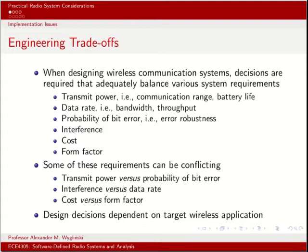For instance, we would love to keep the amount of power used in transmitting a signal to a bare minimum in order to preserve battery life. However, when we minimize the amount of transmit power, this also impacts how well a receiver can pick up our transmission, and thus that could negatively impact bit error rate. Interference and data rate present the same issue: if we transmit more information per unit time, those rapid fluctuations in the transmission waveform can give rise to interference issues.